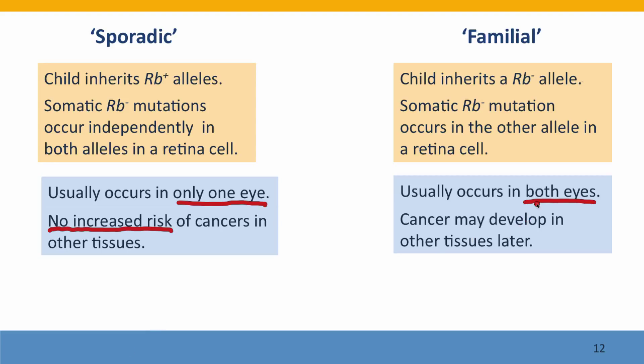But people with familial retinoblastoma may develop cancer in other tissues later. The retina is the most sensitive target affected by retinoblastoma mutations. But because the retinoblastoma gene protein has many functions and acts in many cells, cancer can also develop in other cells.